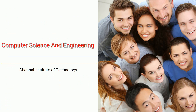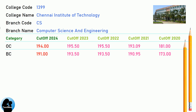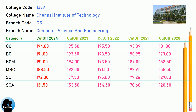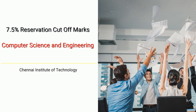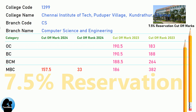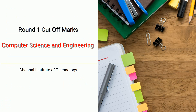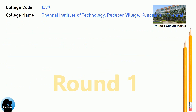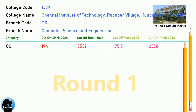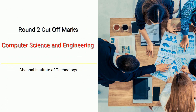DNA Cut-off for Chennai Institute of Technology in Computer Science and Engineering. DNA 7.5 Reservation Cut-off for Chennai Institute of Technology in Computer Science and Engineering. DNA Round 1 Cut-off and Round 2 Cut-off for Chennai Institute of Technology in Computer Science and Engineering.